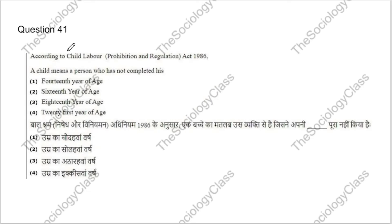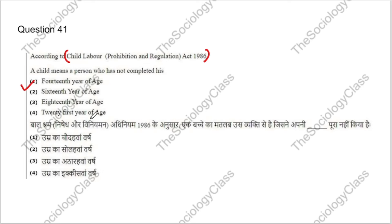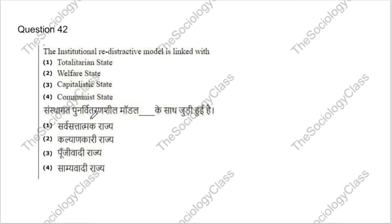Question 41: Child Labour Prohibition Regulation Act of 1986 — a child means a person who has not completed which age: 14, 16, 18, or 21 years? The correct answer is A — a child is a person below 14 years of age.